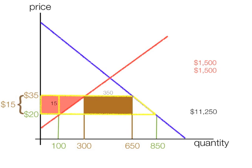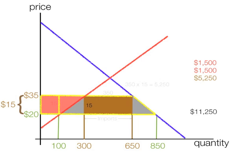The tax revenue is $350 — which is also the amount imported — times 15, which is the tariff. So 350 times 15 equals $5,250, and that's revenue to the government from the tariff.